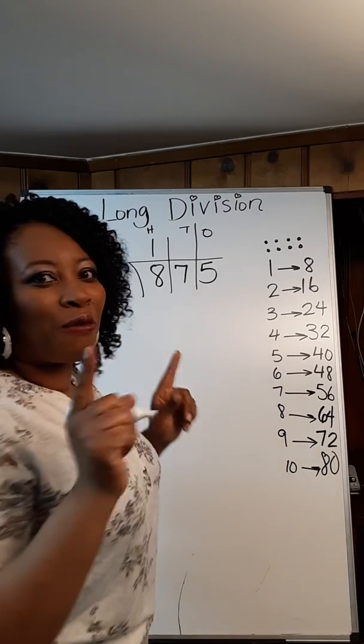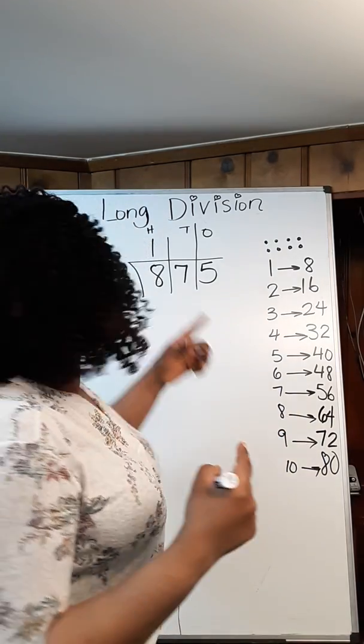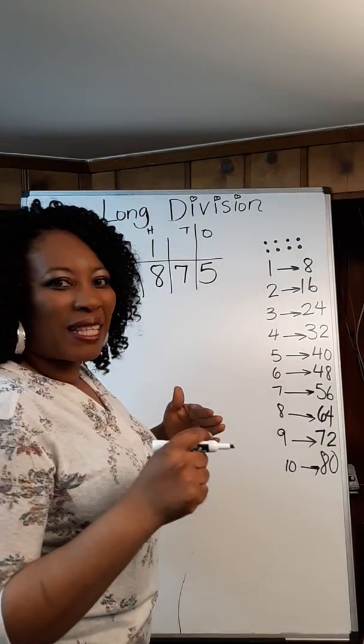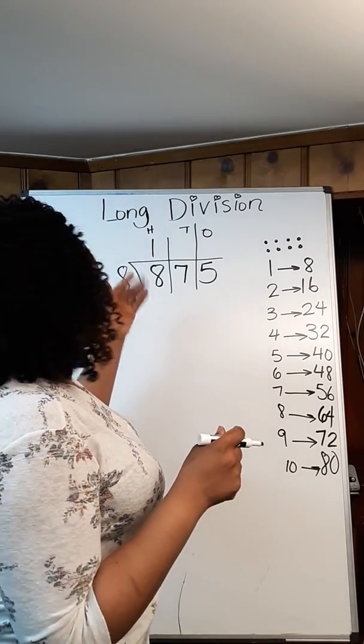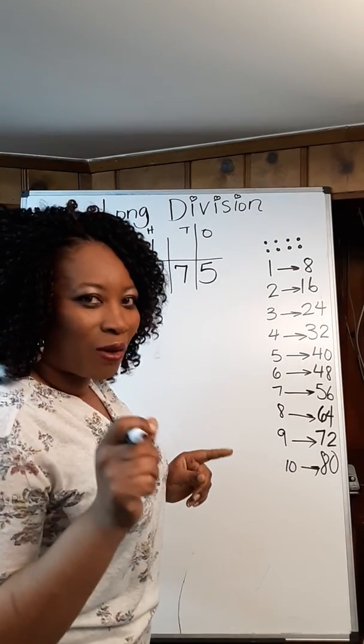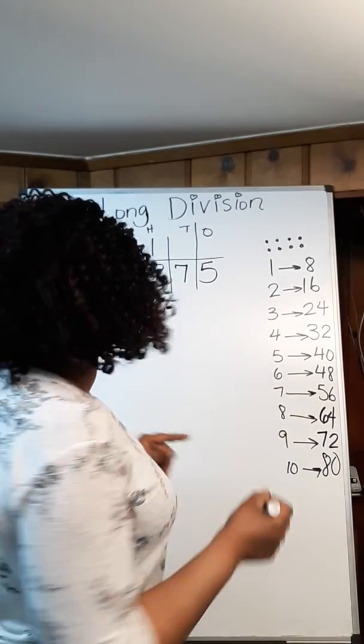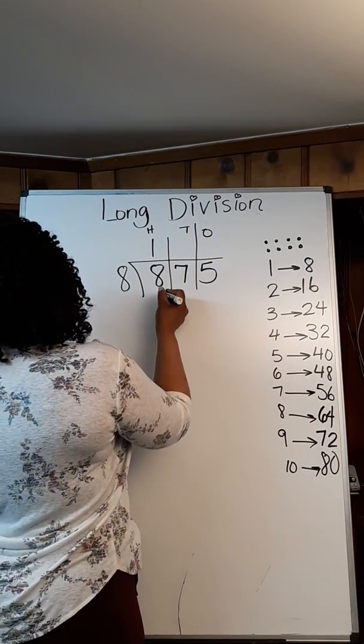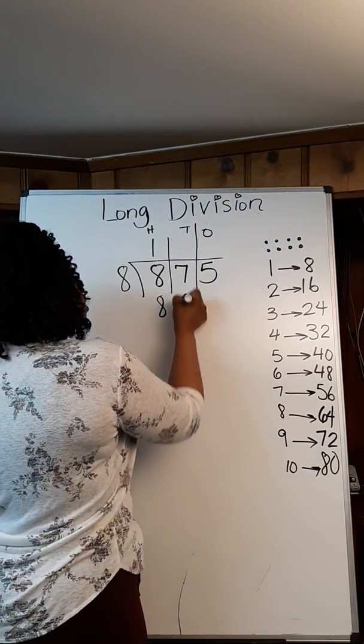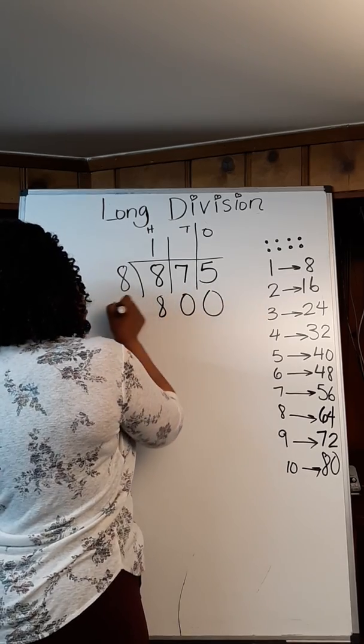The only difference with the previous method is Singapore Math said, well, if we're working with the hundreds place, we should have two zeros. And they're absolutely correct. So now what we're going to do is put 800 here, add two zeros right here. That's the difference.